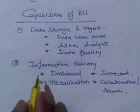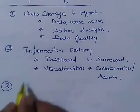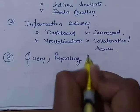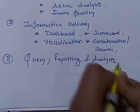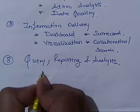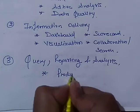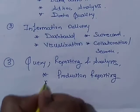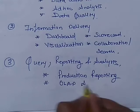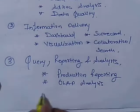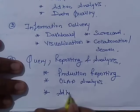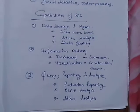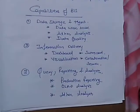These are the main types of information delivery. The third capability is querying, reporting, and analysis. In this, we can use production reporting, online application processing and analysis, and ad hoc analysis. These are the three important capabilities of the Business Intelligence System. Thank you very much.